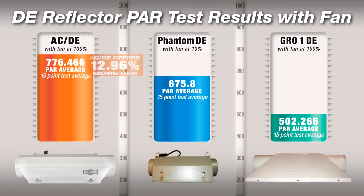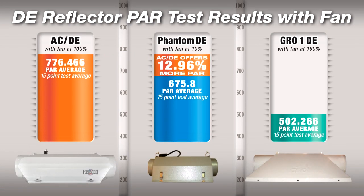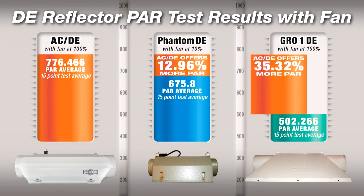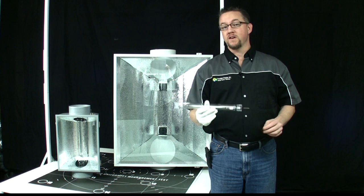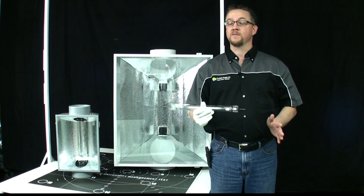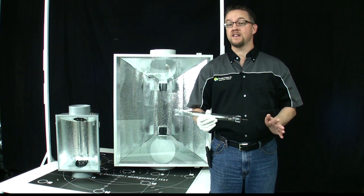As you can see, the AC-DE offers 13% more PAR output than the Phantom DE and 35% more PAR output than the GROW 1 DE. These performance results are not just due to the different type of reflective material used or the optical design.